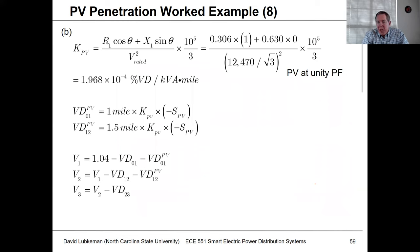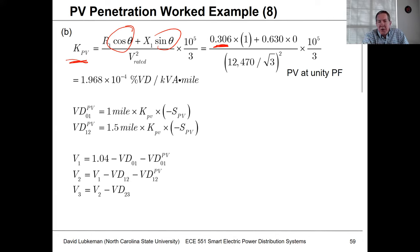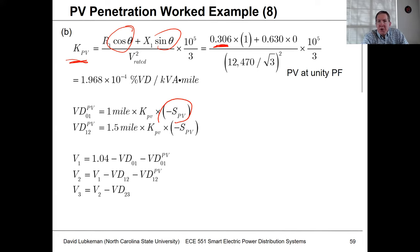Now looking at PV penetration — similar to how we handled the voltage boost due to capacitors, we're going to have a K factor for PV. For PV operating at unity power factor, the sine theta term is zero and the cosine theta term is one. The K_PV term is based on the interaction between the line resistance and the unity power factor. Applying the K factor, PV acts as a negative load — if you have 5,000 kW of PV against 5,000 kW of load, you get a net load of zero and a voltage boost instead of a voltage drop.